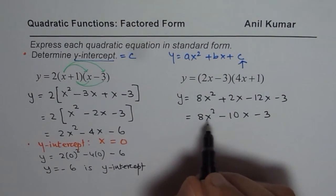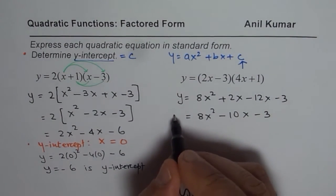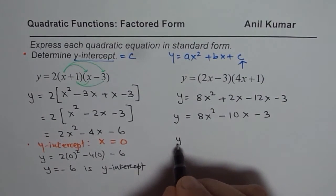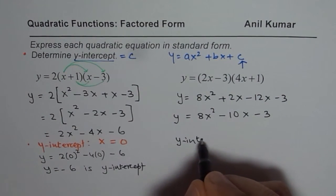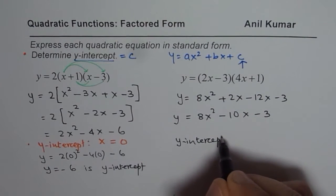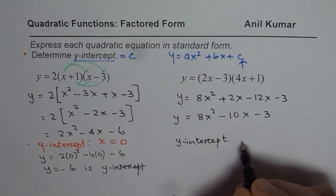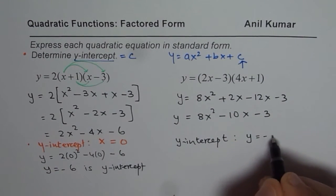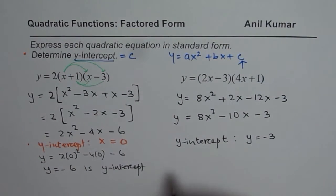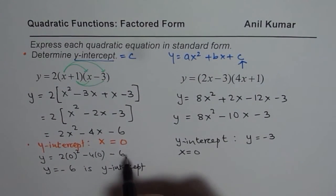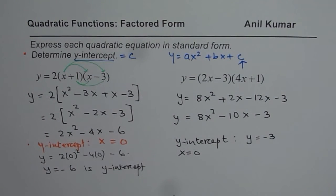So that is the second equation in standard form. The y-intercept in this case is minus 3 — we can easily read it directly from the standard form. We get it by placing x equals 0, just as we did before. So that is how you should solve such questions. I hope that helps. Thank you and all the best.